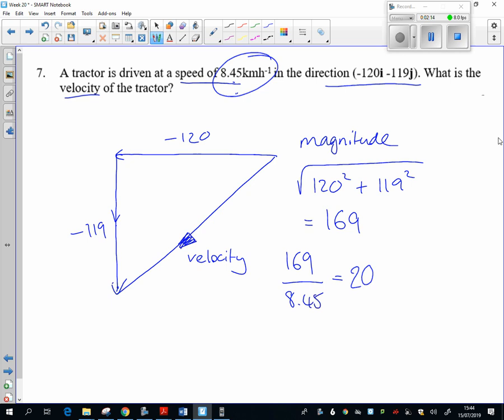So what that really means is our tractor isn't traveling 120 in that direction and 119 in that direction. It's traveling 1/20th of that, so actually, that's more like what our tractor is doing.